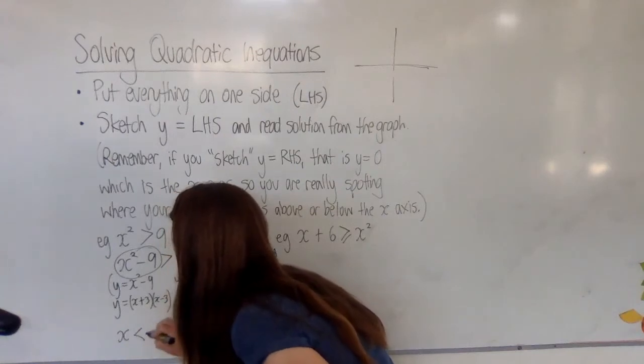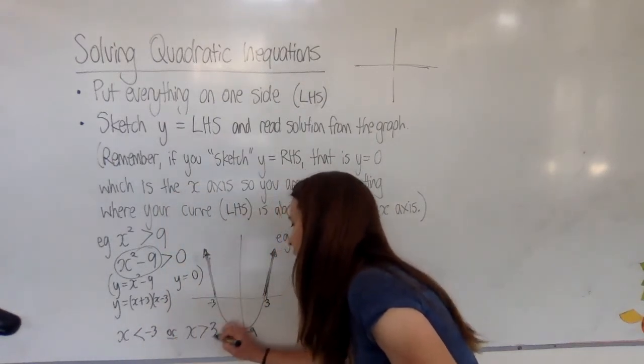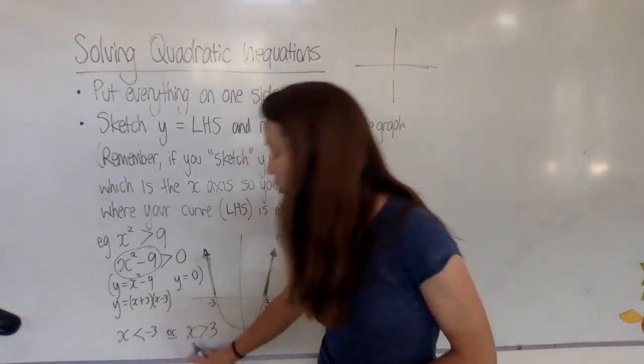The solution is x has to be less than minus 3 or greater than 3. Now it can't be both of those things at the same time, so the answer has two parts.